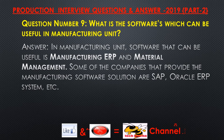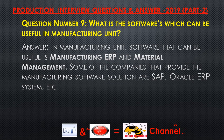Question number nine: What are the software tools which can be useful in a manufacturing unit? Answer. Software that can be useful in a manufacturing unit includes manufacturing ERP and material management systems. Some of the companies that provide manufacturing software solutions are SAP, Oracle ERP system, etc.